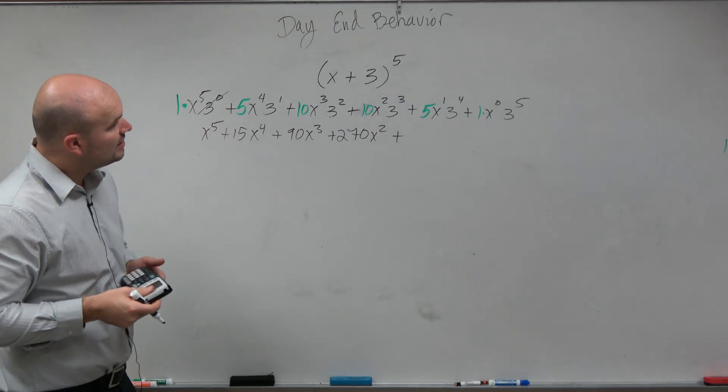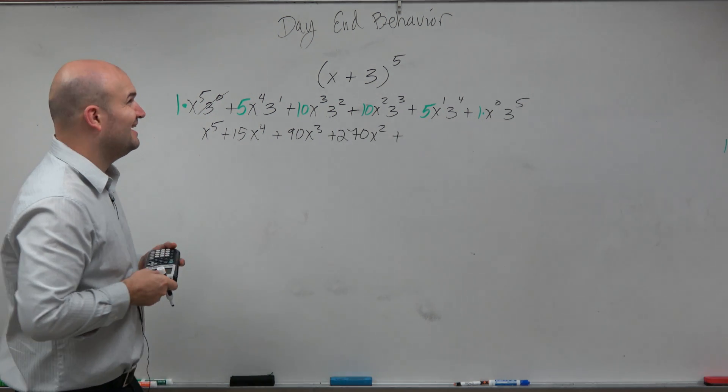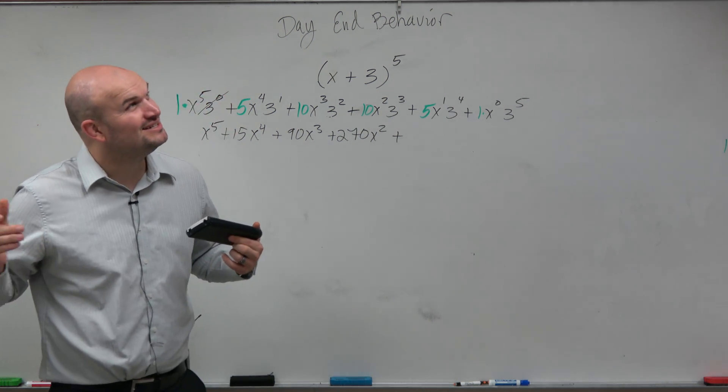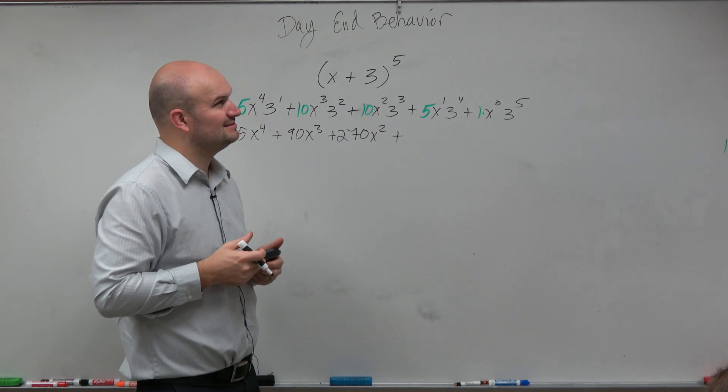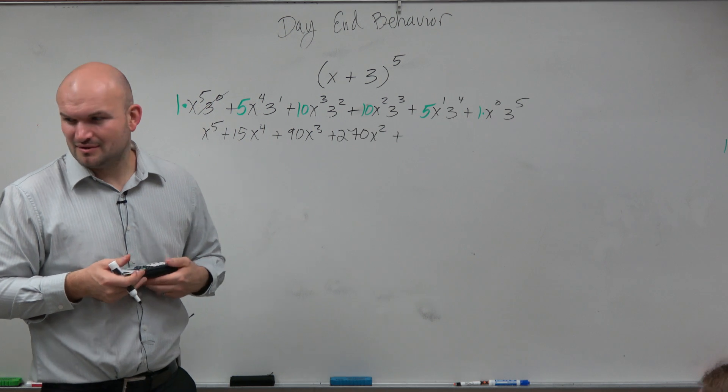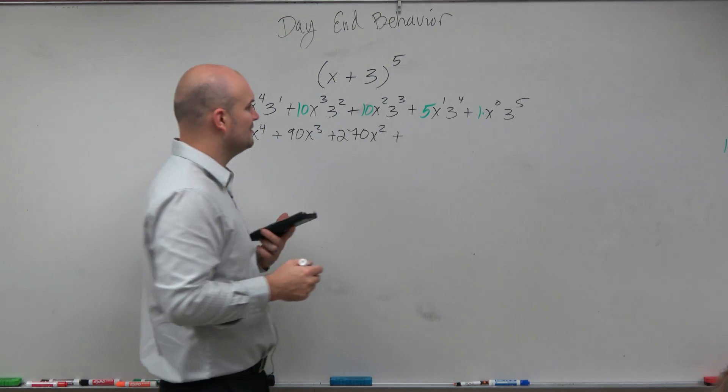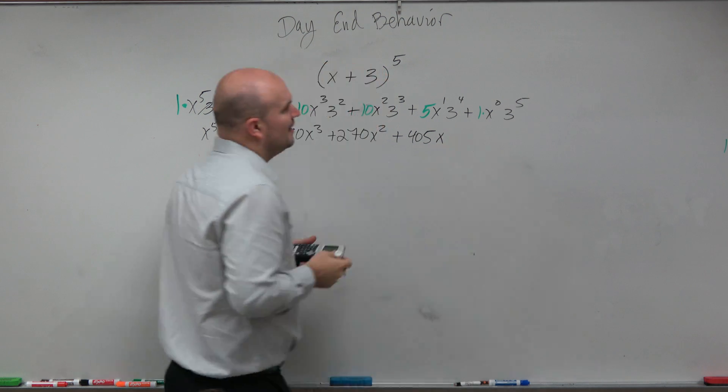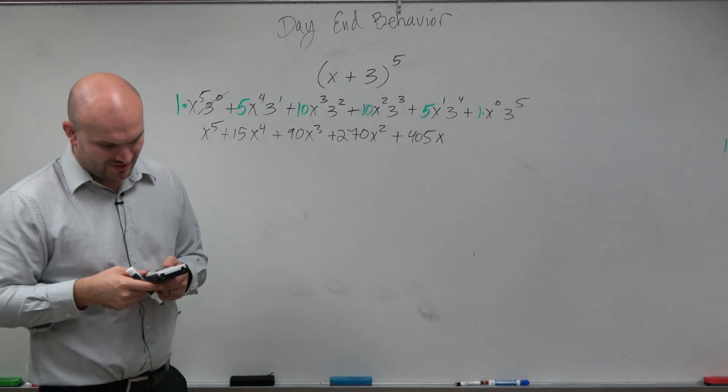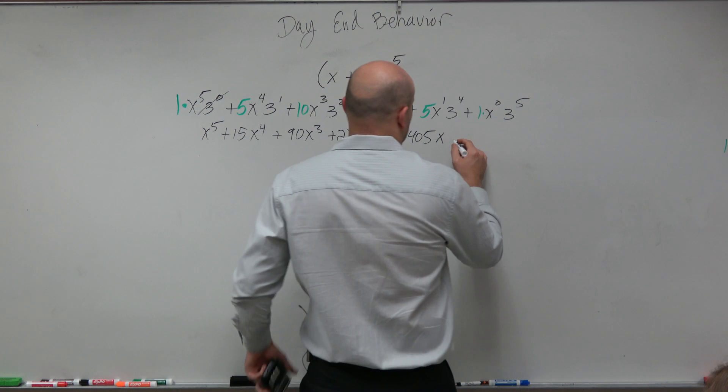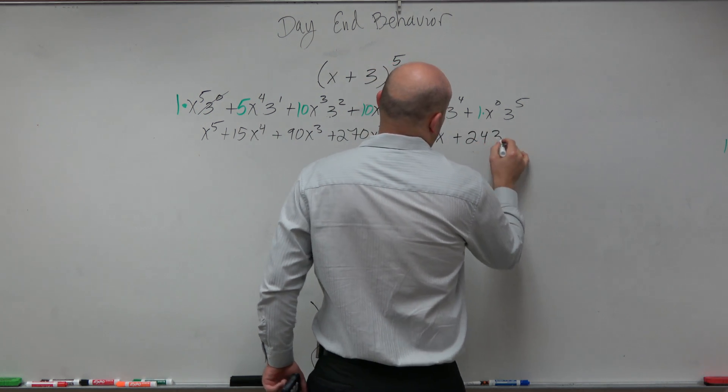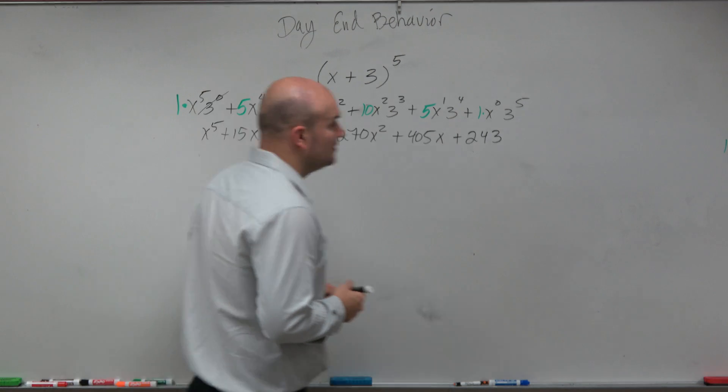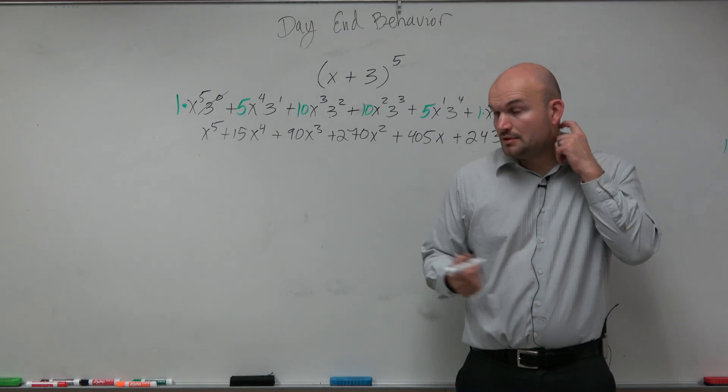Plus 3 to the fourth power is going to be 81. 81 times 5 is going to be 440, or 405? 5, yeah, 405, x, and then I have 3 to the fifth power, which was, what is it, 243? Plus 243, oh, yeah, 405, there we go.